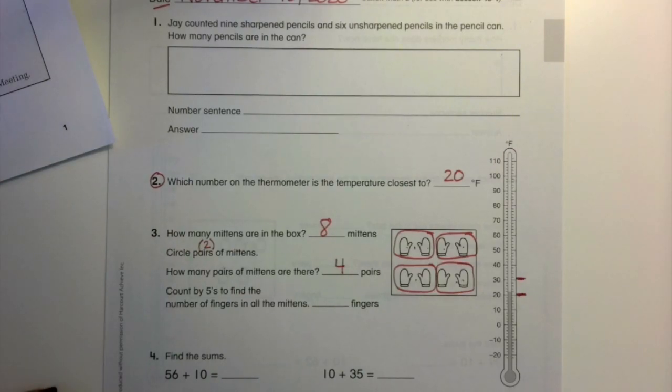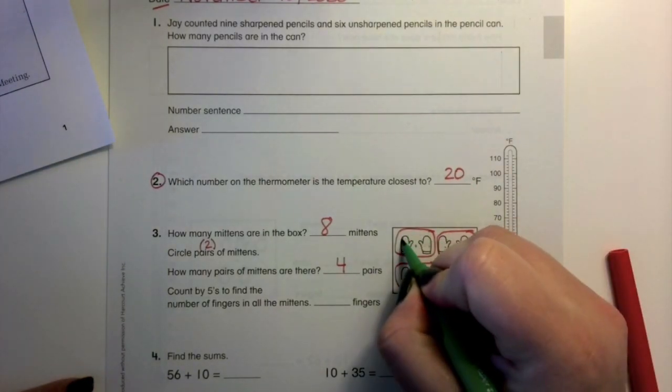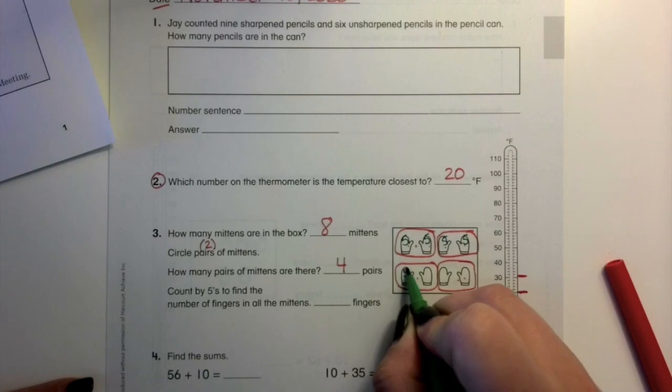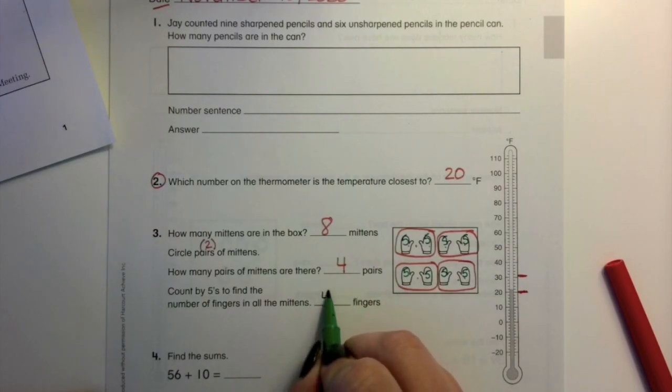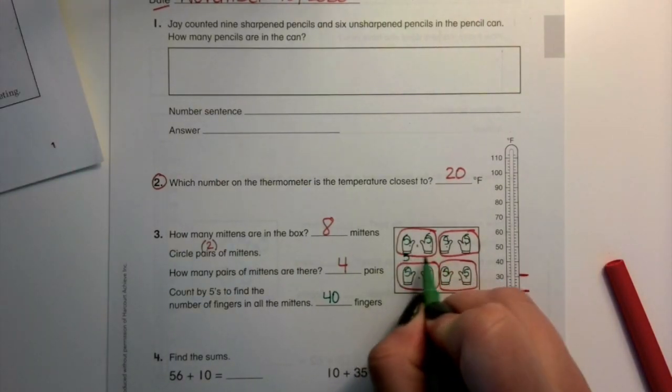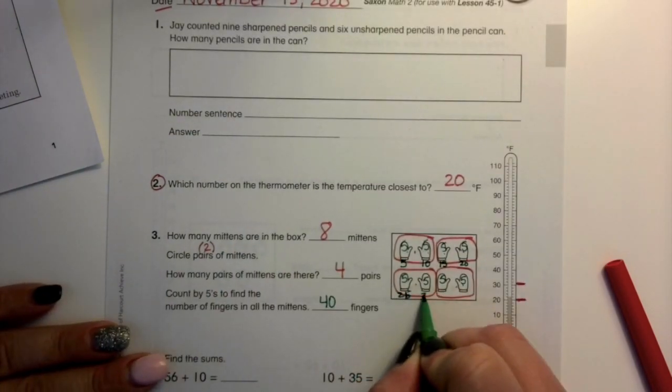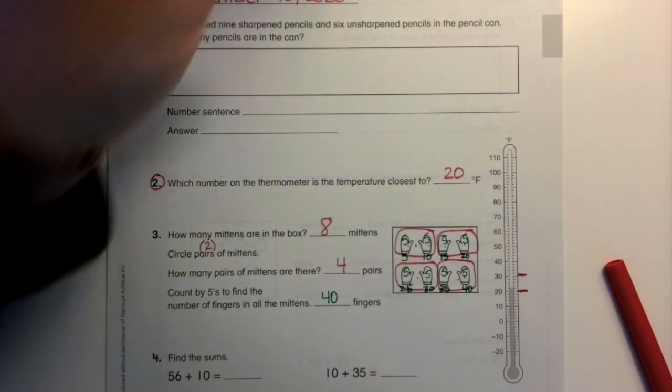Now, we're going to count by five to find the number of fingers in all those mittens. These are different colors so that it shows up a little bit better for you. Here we go. We're going to count by five. Five, ten, fifteen, twenty, twenty-five, thirty, thirty-five, forty. I chose to put a five in each of those. You could have written it underneath like when we're counting other money. Five, ten, fifteen, twenty, twenty-five, thirty, thirty-five, forty. You could have done it either way. Okay.